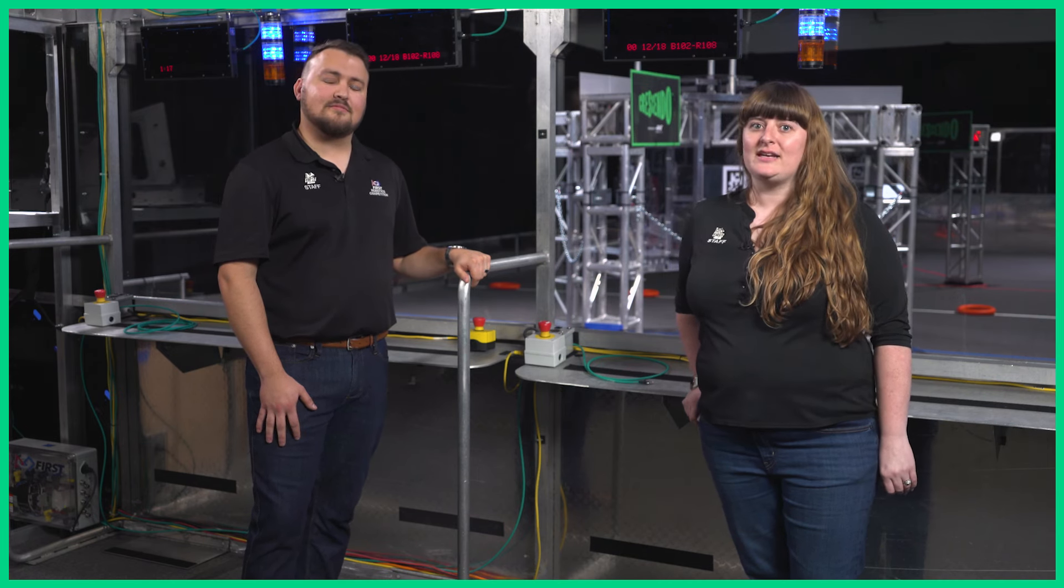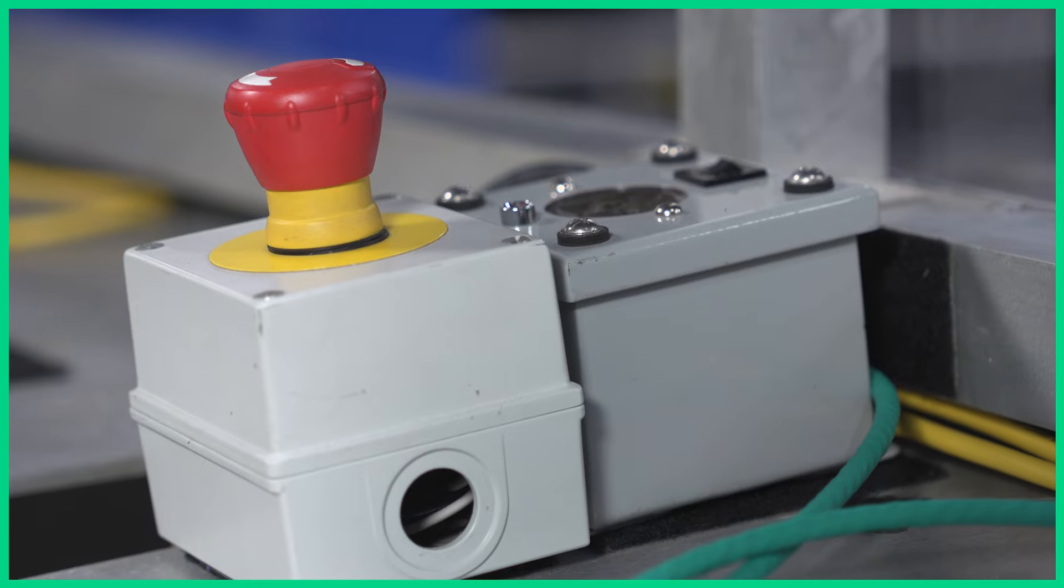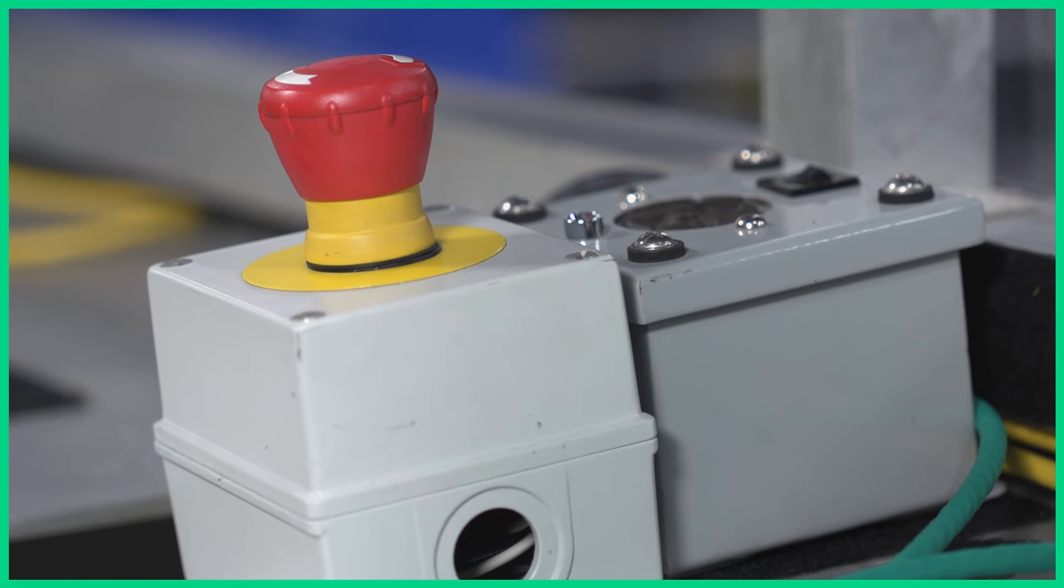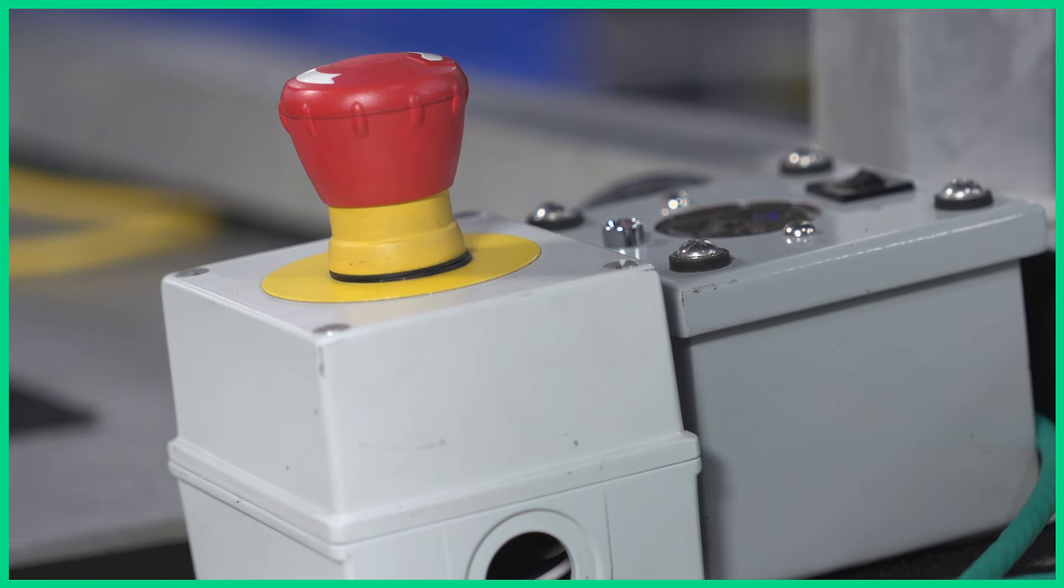When the A-stop is pushed, the amber light in the driver station blinks. On the opposite side is the normal E-stop button that lets you disable your robot for the match if necessary.